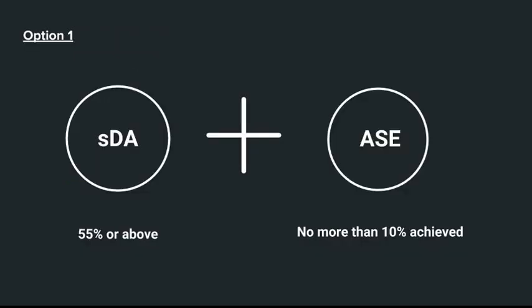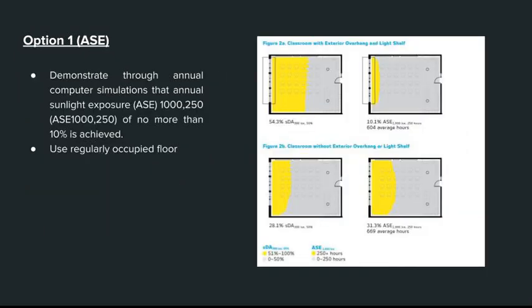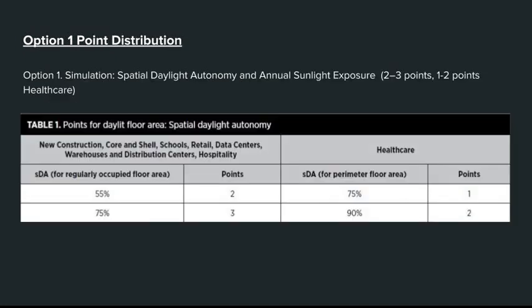There are two important quantities in option one. The first is spatial daylight autonomy, and the second is annual sunlight exposure. For the spatial daylight autonomy section, demonstrate through annual computer simulation that a spatial daylight autonomy of at least 55, 75, or 90% is achieved. For the option one ASE part, demonstrate through annual computer simulation that annual sunlight exposure ASE 1250 of no more than 10% is achieved. Use regularly occupied floor area for the calculations.